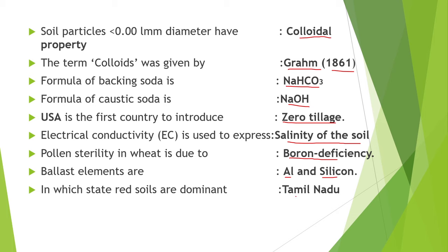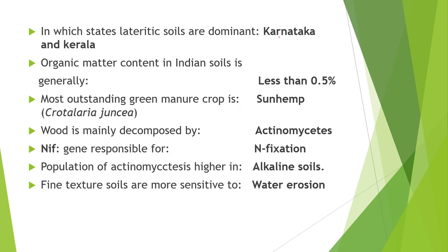In which state are red soils dominant? It is dominant in Tamil Nadu. In which state are lateritic soils dominant? It is dominant in Karnataka and Kerala. The organic matter content in Indian soil is generally less than 0.5%. The most outstanding green manure crop is sunhemp — that is Crotalaria juncea. Wood is mainly decomposed by actinomycetes, which is a type of fungi. The NIF gene is responsible for nitrogen fixation in soil.